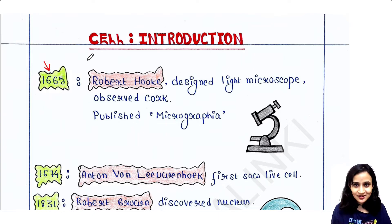In 1665, the person Robert Hooke was the first person who designed a light microscope. He made some glass lenses and designed a light microscope in his own way. For the first time, he observed cork, that is the bark from the tree. He has taken some bark of a tree.